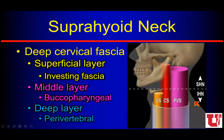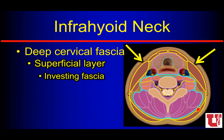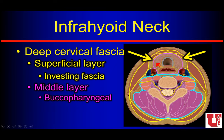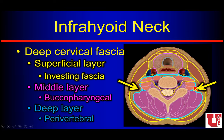These cervical soft tissue fascia layers define these spaces, and some of them are like tubes that extend through both the suprahyoid and the infrahyoid neck, so they may direct pathology superiorly and inferiorly. In the infrahyoid neck, the superficial investing layer is around the SCM and some of the strap musculatures anteriorly, the buccopharyngeal fascia is again around the upper digestive tract, and the deep perivertebral fascia is around the vertebral bodies and all that perivertebral musculature.